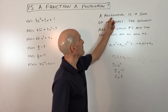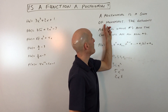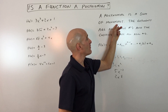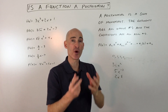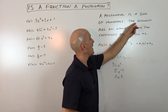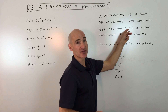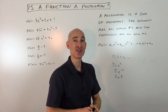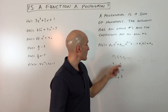The definition tells us that a polynomial is a sum of monomials — monomial means one term or one group, a sum of those. The exponents are all whole numbers, so you're not going to have any fractions, and you're not going to have any negative numbers.